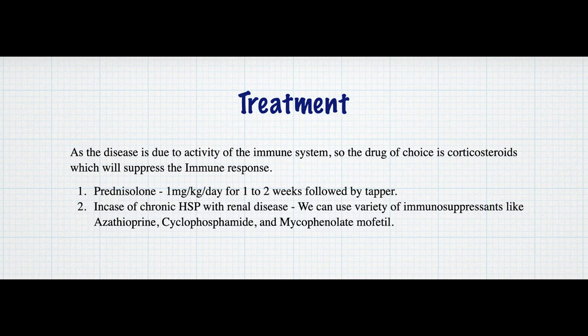Now let's learn about the treatment of HSP. As the disease is due to activity of the immune system, the drug of choice is corticosteroids, which will suppress the immune response — prednisolone 1 mg per kg per day for 1 to 2 weeks followed by taper. In case of chronic HSP with renal disease, we can use a variety of immunosuppressants like azathioprine, cyclophosphamide, and mycophenolate mofetil.